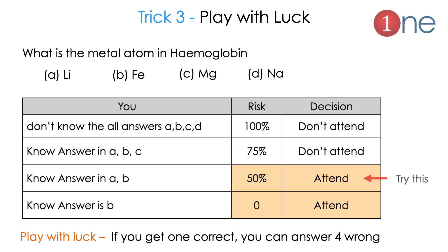If you know two answers are not correct, the risk drops to 50%. This is very interesting — you have a 50/50 chance of full marks or no marks. This is the best calculated risk you can take. Always attempt the 50% risk question. If you know the answer straight away, of course attend it. Normally wrong answers carry a one-fourth negative mark penalty, but at 50% risk your luck can be very favorable.